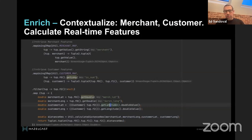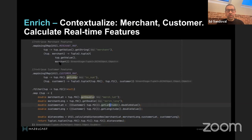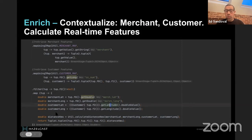The next step is contextualizing — retrieving the customer features, merchant features, and real-time features. Assuming we store merchant and customer features in Hazelcast, the next step is to marry the incoming transaction with data about that customer or merchant already stored in Hazelcast. This is shown using `mapUsingIMap` — the first call retrieves merchant features, the second retrieves customer features. Towards the bottom of this code segment, we calculate the distance between the customer and the merchant now that we know the coordinates of both.